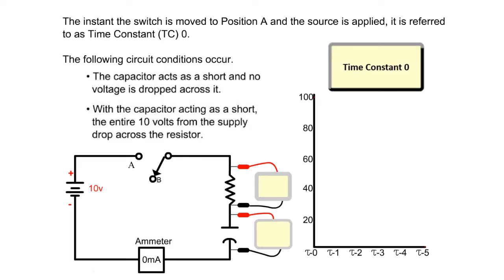The instant the switch is moved to position A and the source is applied, it is referred to as time constant zero. The following circuit conditions occur.